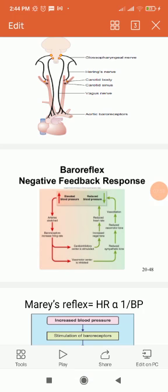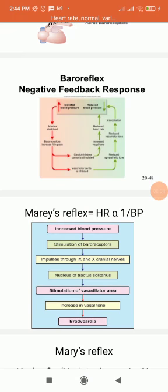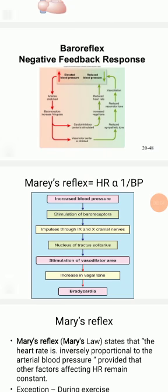Increased blood pressure stimulates the baroreceptors, and through the glossopharyngeal and vagus nerves, it stimulates the cardiac center — the nucleus tractus solitarius. This stimulates the vasodilator area, which increases the vagal tone, and as vagal tone increases, the heart rate is reduced. So in Marey's reflex, heart rate is inversely proportional to the blood pressure: when blood pressure increases, heart rate reduces, and when blood pressure decreases, heart rate increases.